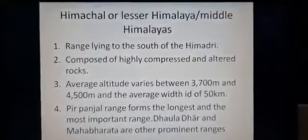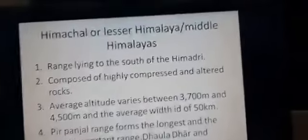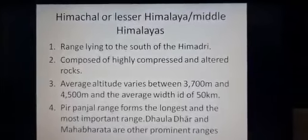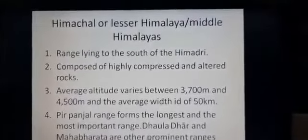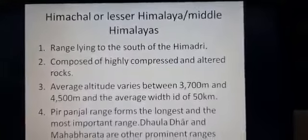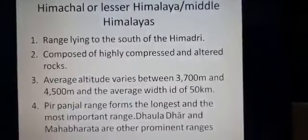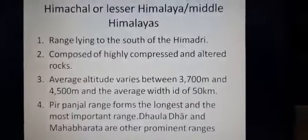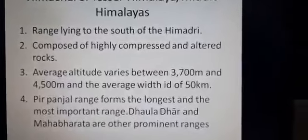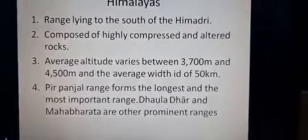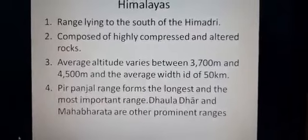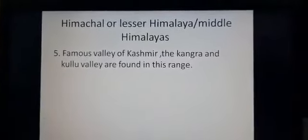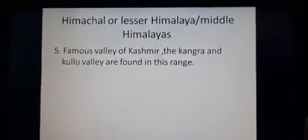Now we'll talk about Himachal — the range lying to the south of Himadri, also called Lesser Himalaya. It is composed of highly compressed and altered rock. The average altitude is 3700 to 4500 meters and the average width is 50 kilometers. Prominent ranges include Pir Panjal (the longest) and Mahabharat range. Famous valleys such as Kashmir, Kangra, and Kullu are basically found in this range.